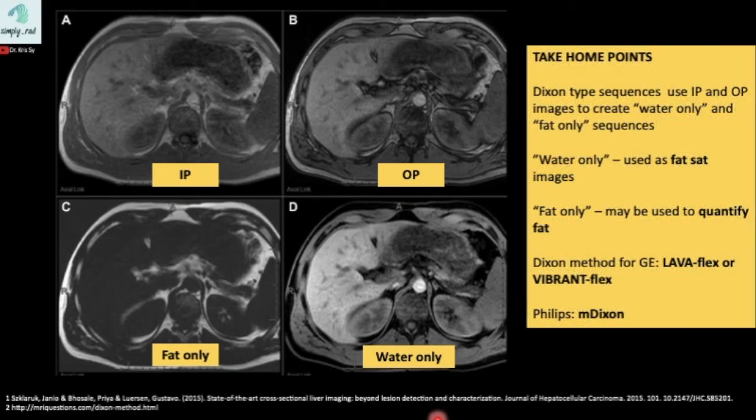Here are our take-home points. Dixon method creates water-only images, useful as fat-sat images and fat-only images for quantification of fat. This Dixon method is applied by vendors and are given different names, such as Labaflex or Vibrant Flex for GE or MDixon for Philips.